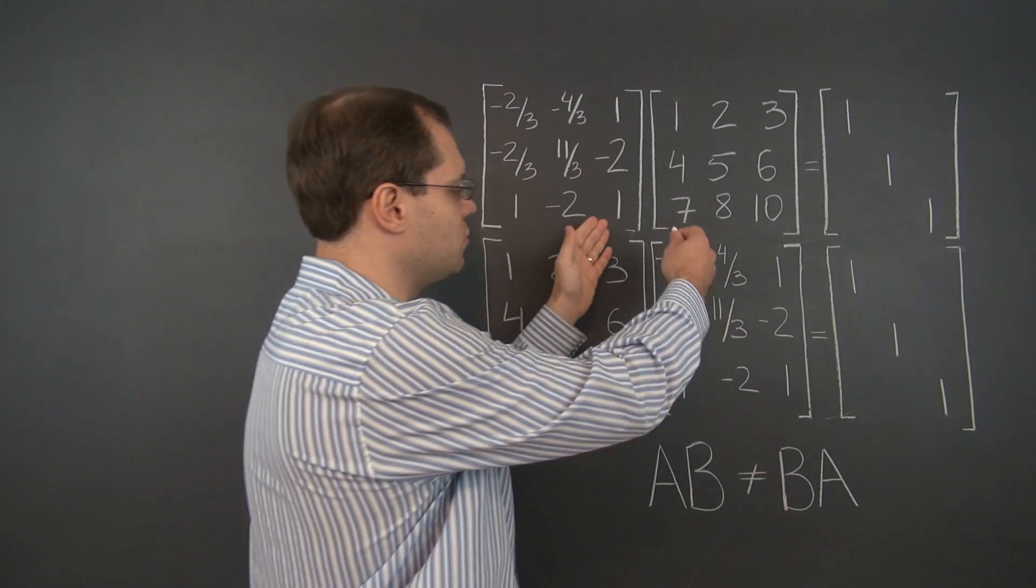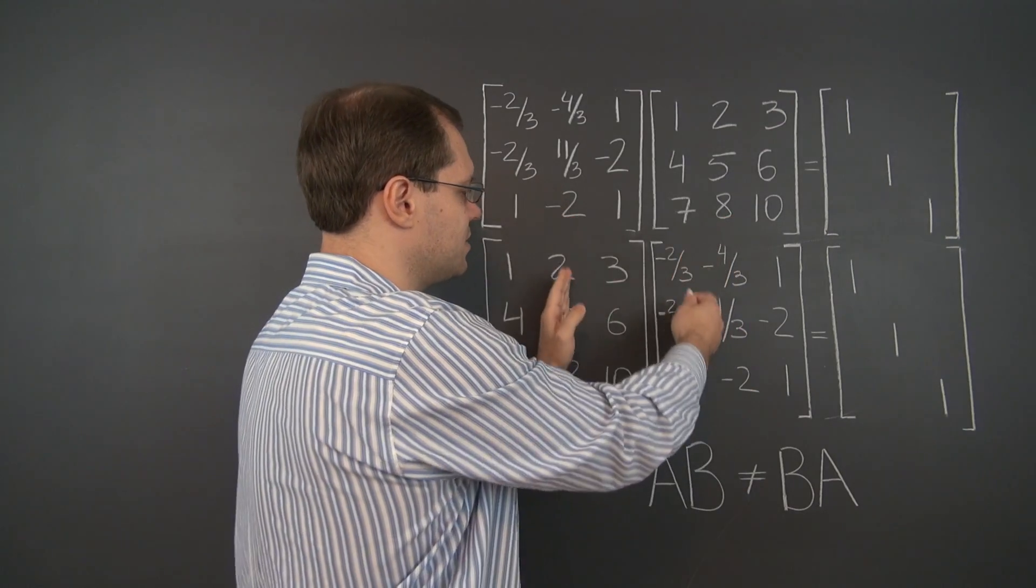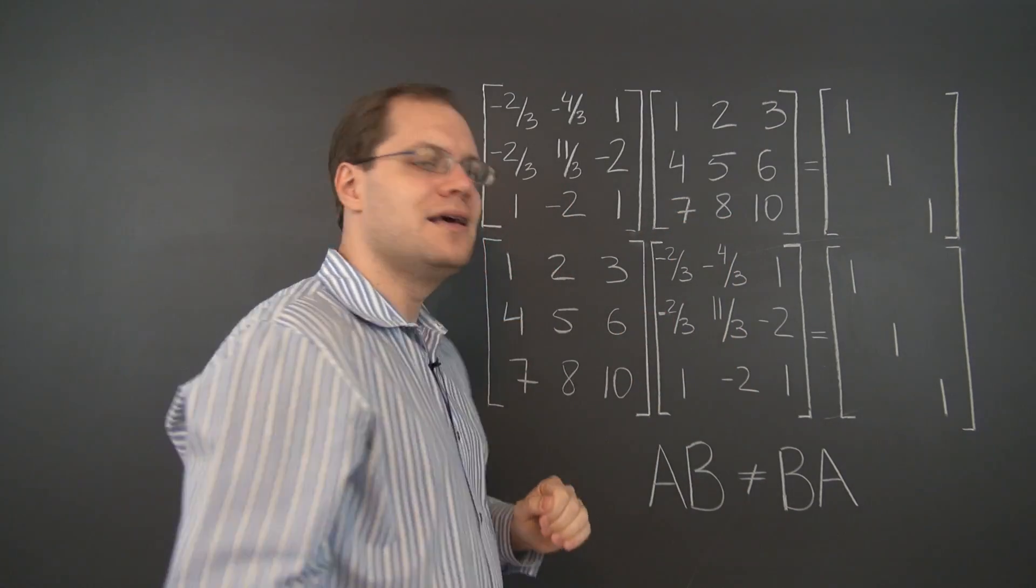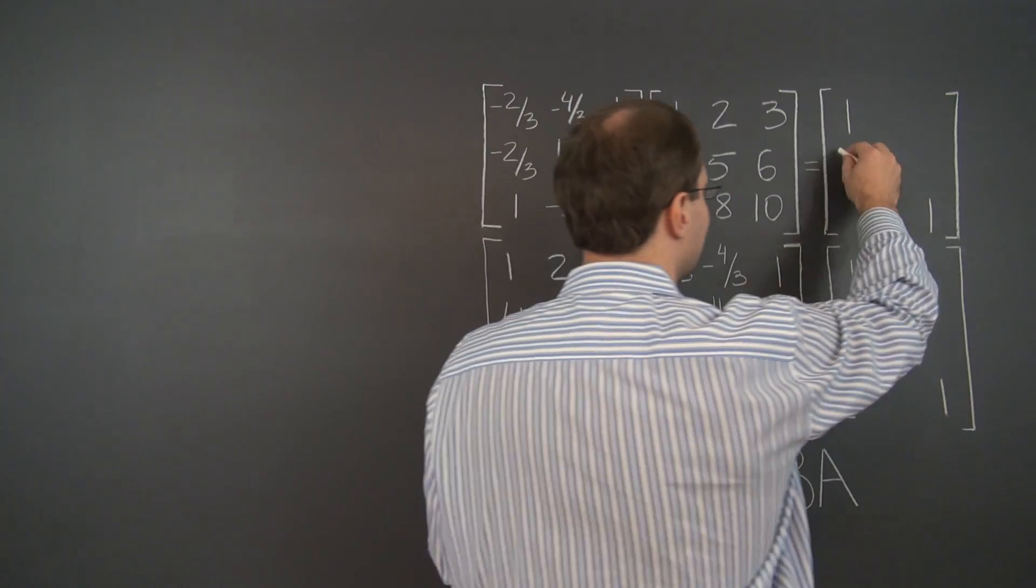Because when you try to do the multiplication you realize that these numbers here versus here interact in completely different ways. Let's take a quick look at a couple entries.